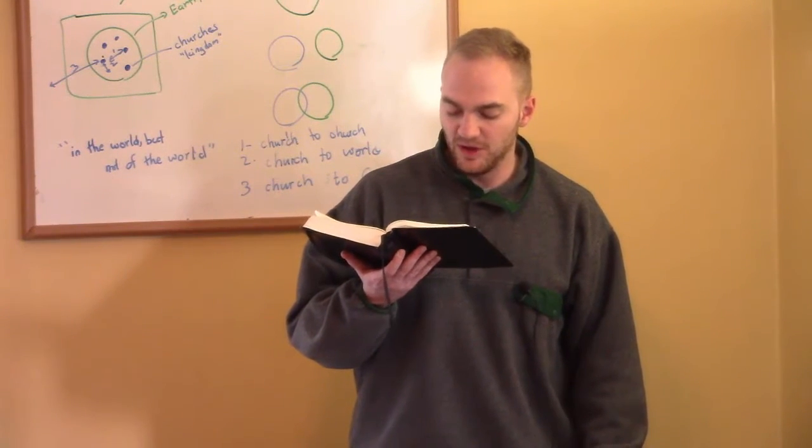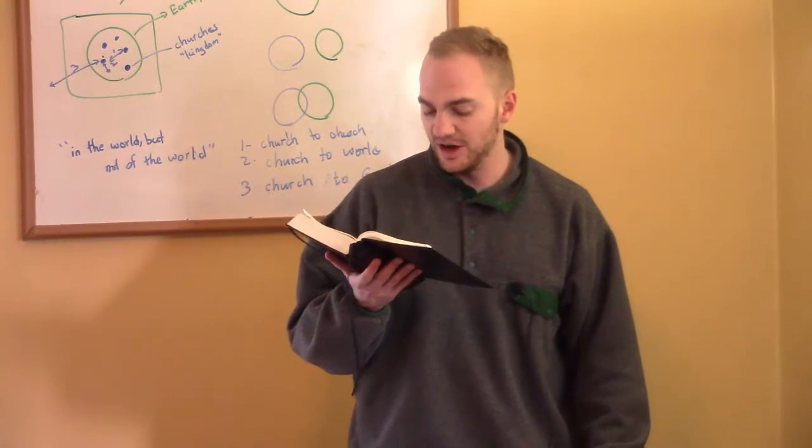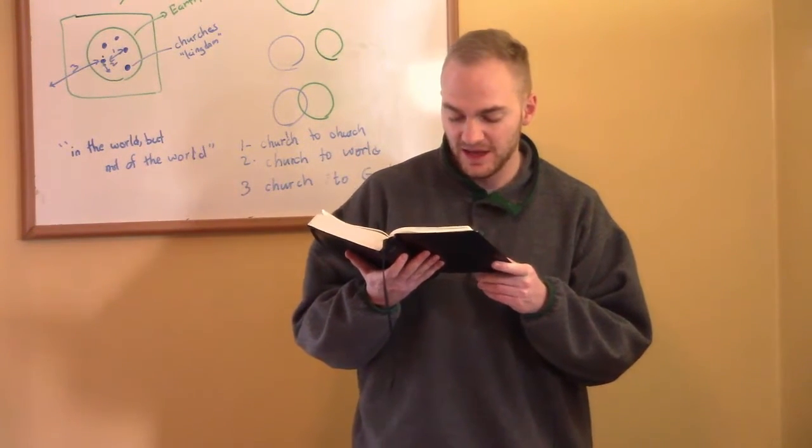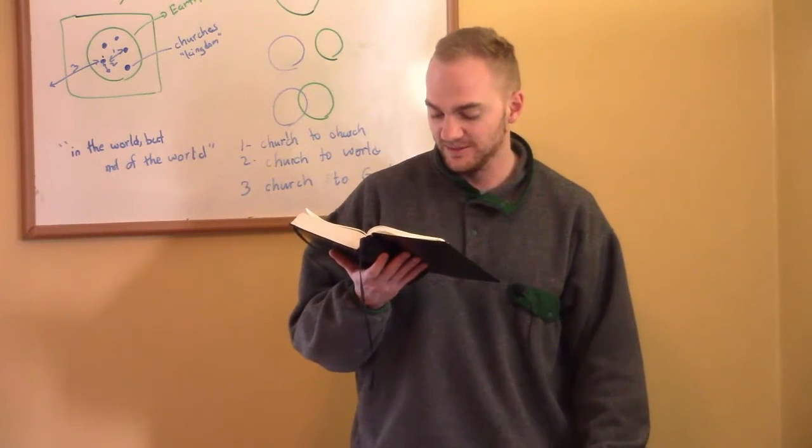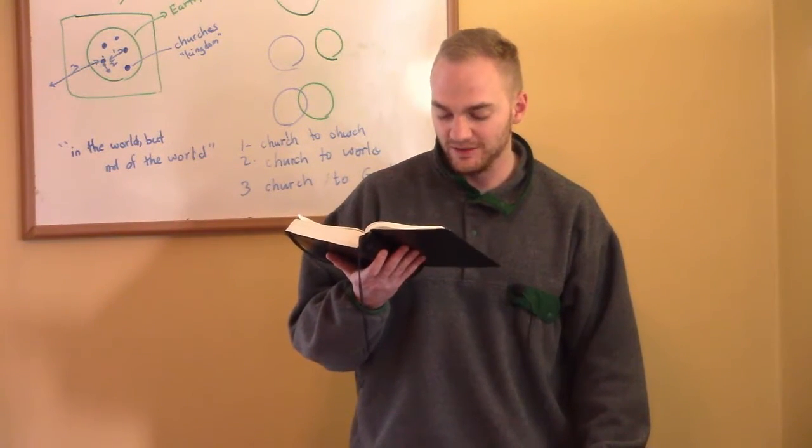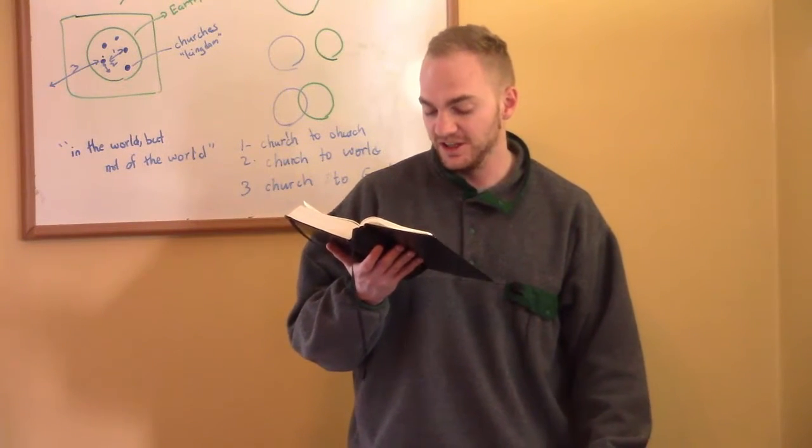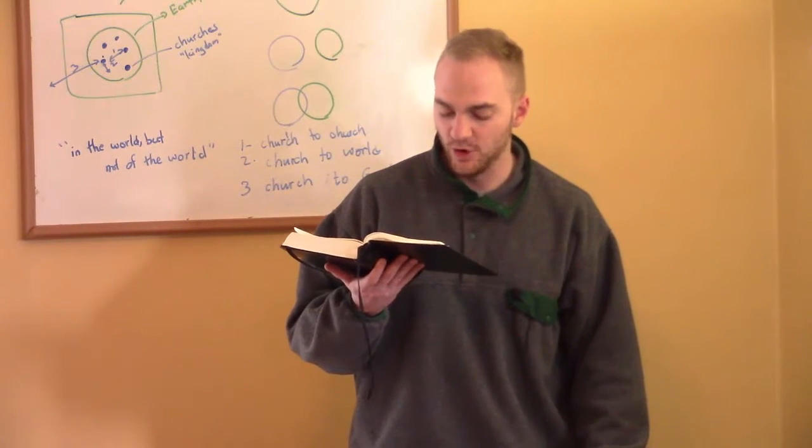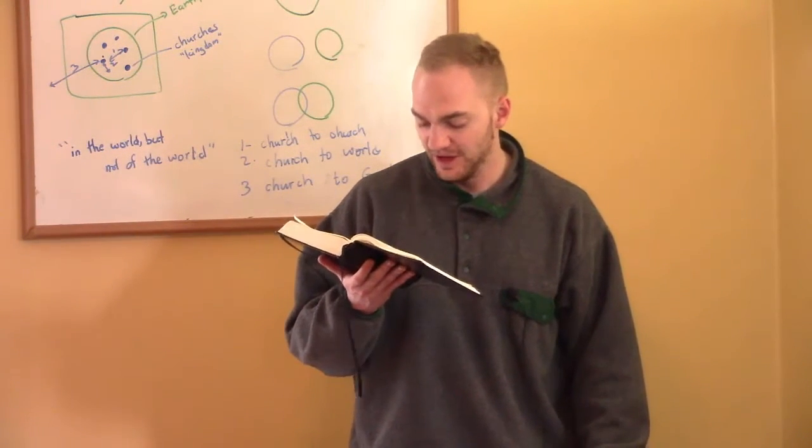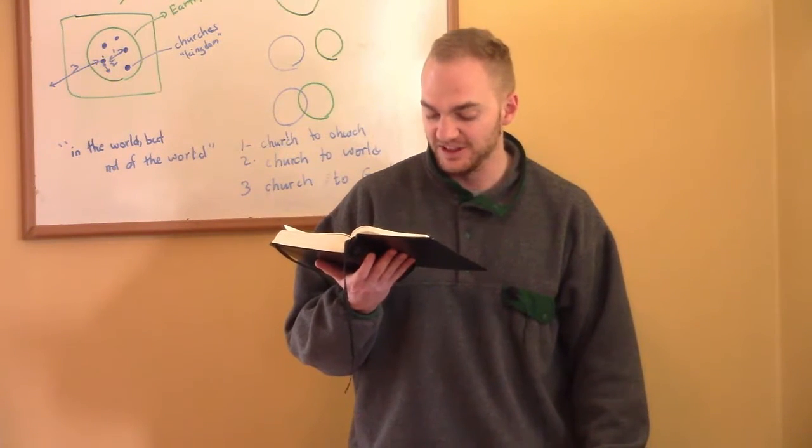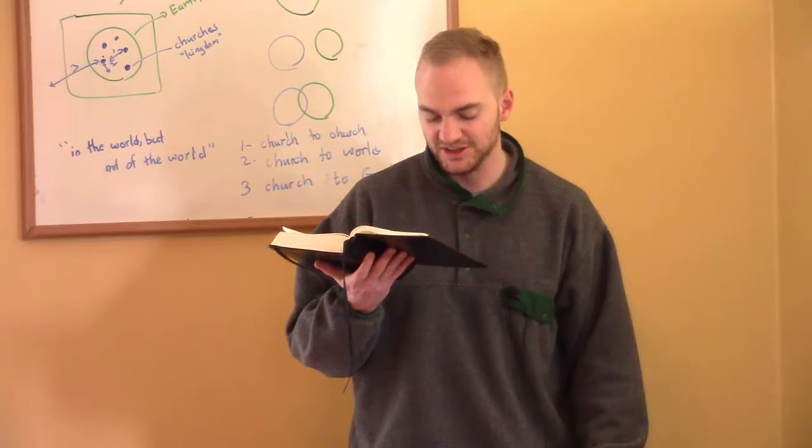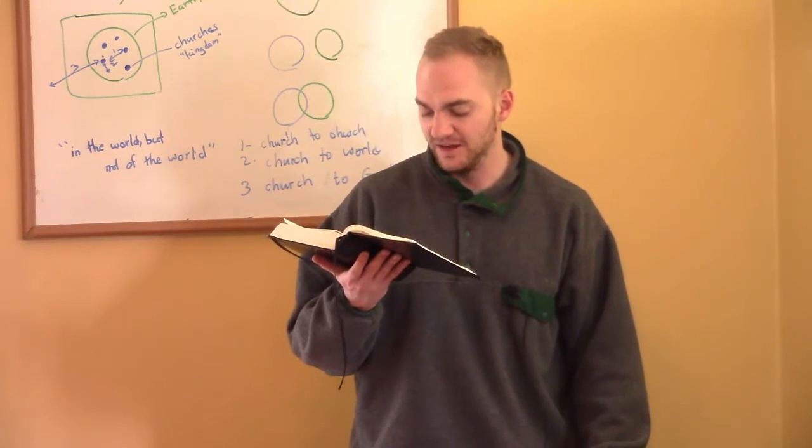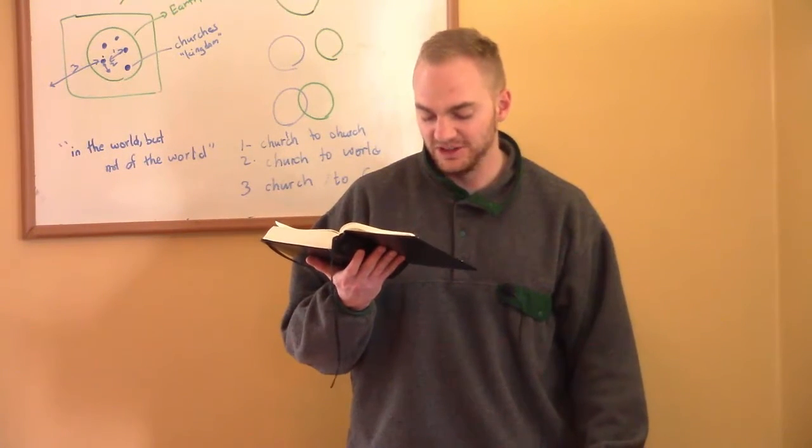Samuel judged Israel all the days of his life. And he went on a circuit, year by year, to Bethel, Gilgal, and Mizpah. And he judged Israel in all these places. Then he would return to Ramah, for his home was there. And there he judged Israel. And he built there an altar to the Lord. When Samuel became old, he made his sons judges over Israel. The name of his firstborn was Joel, and the name of his second, Abijah. They were judges in Beersheba. Yet his sons did not walk in his ways, but turned aside after gain. They took bribes and perverted justice.